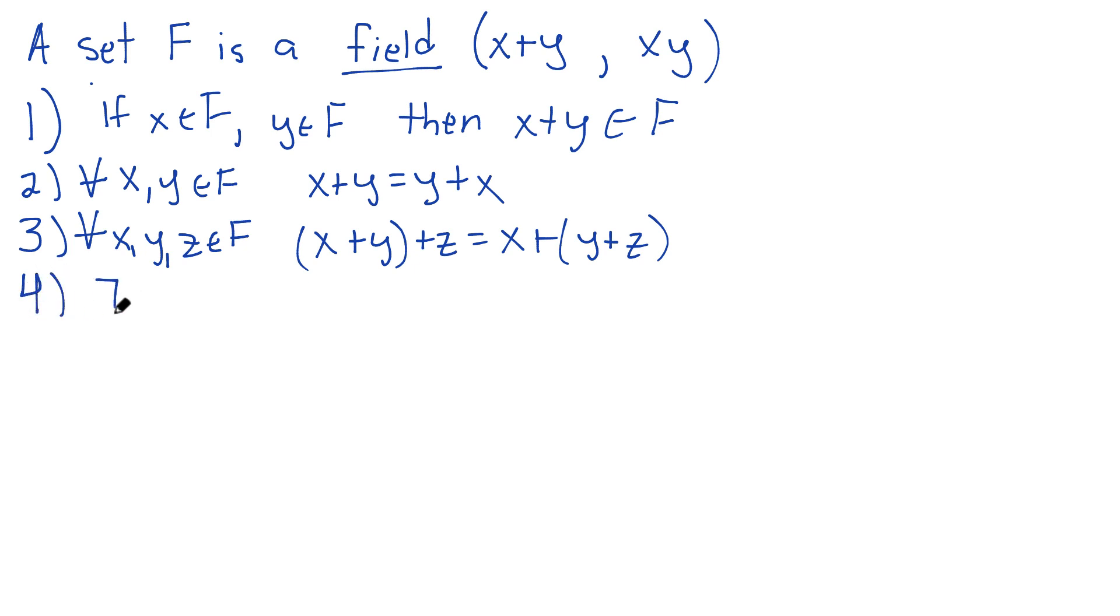Number four, there exists some element in F, I'm going to label it like this, because we're going to call it a zero. There exists a zero in F, such that zero plus x is the same thing as x, which is also the same thing as x plus zero.